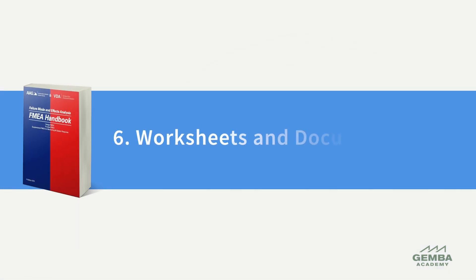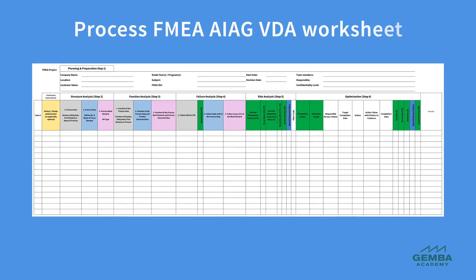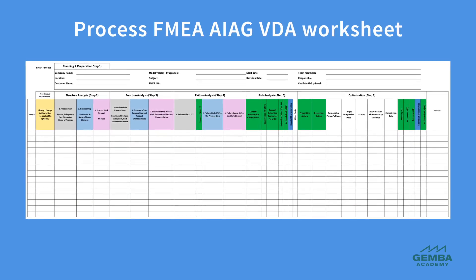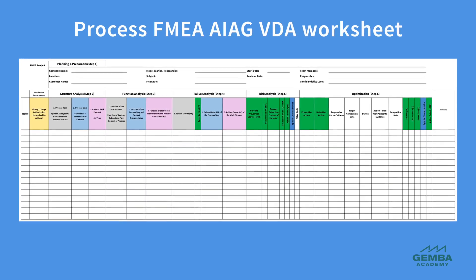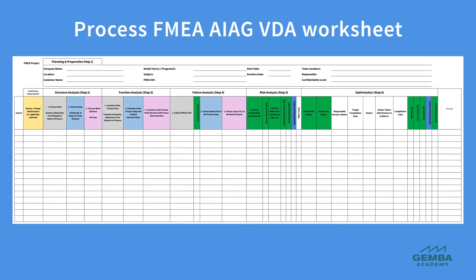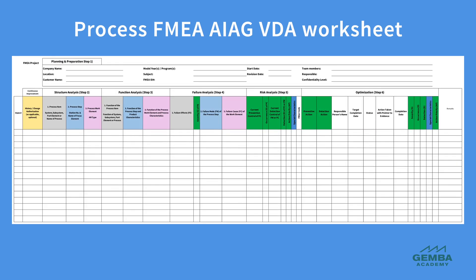Sixth, the AIAG handbook introduces new worksheets that require more detailed documentation. The aim is both to ensure consistency and thoroughness in the FMEA process and to capture details during each step that simpler formats could miss.